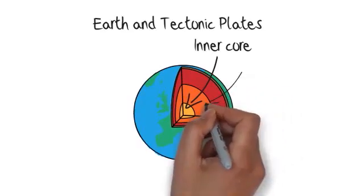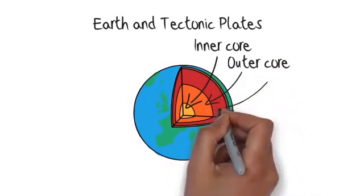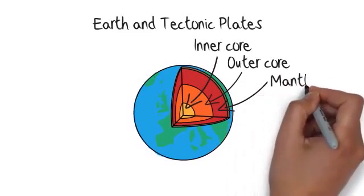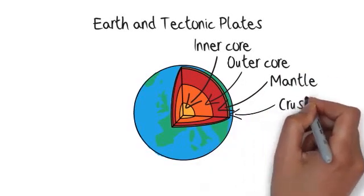The solid inner core is made up of blazing hot iron and nickel, and is surrounded by the liquid outer core. The mantle is made up mostly of magma or molten rock, and the crust is the layer we live and walk on.